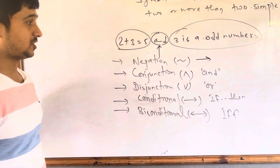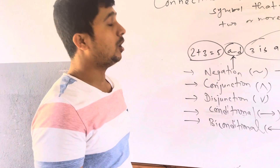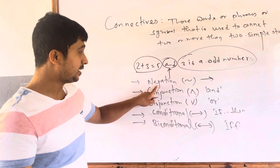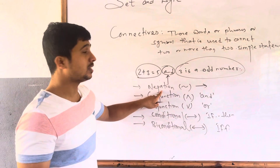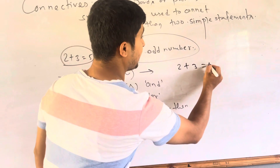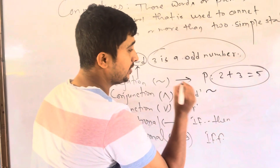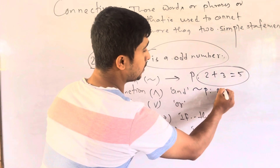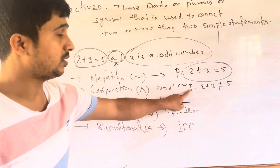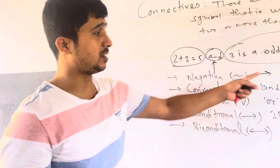Let's talk about negation. What is negation? If we state the opposite version of a given statement, that is negation. Negation is a statement that denies the given statement. For example, if statement P is '2 plus 3 equals 5', the negation of P is '2 plus 3 is not equal to 5'. The symbol is ¬P.